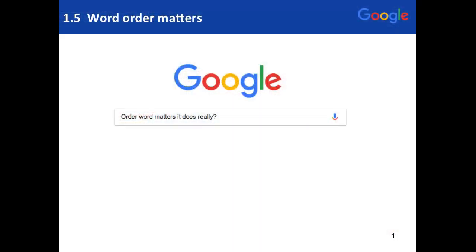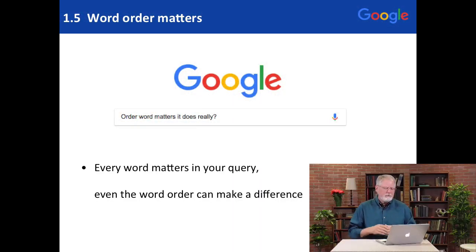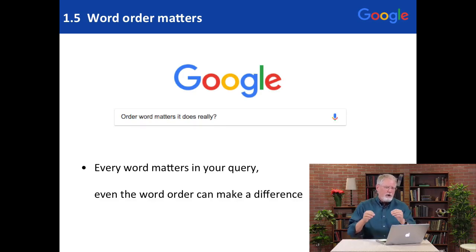So if you have terms that are, for example, two words like a city named San Francisco, you probably want to say San Francisco, not Francisco San. So those will matter. But otherwise, word order matters more generally. It's true that every word in a query matters, as well as the word order sequence mattering.